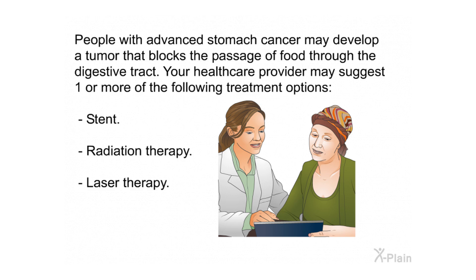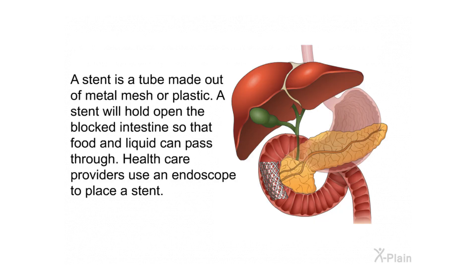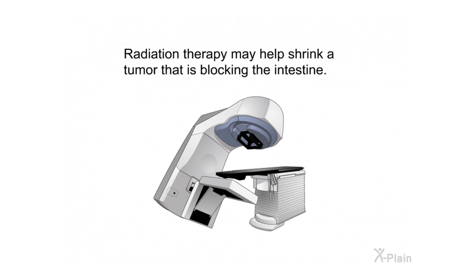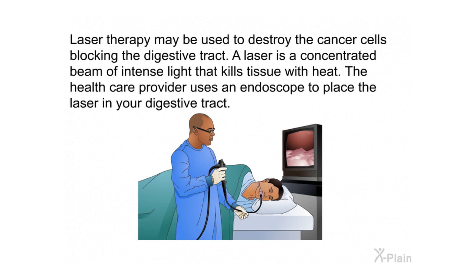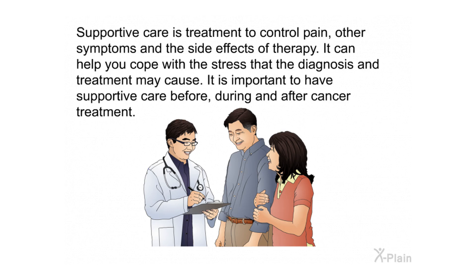People with advanced stomach cancer may develop a tumor that blocks the passage of food through the digestive tract. Treatment options in this case include a stent, radiation therapy, or laser therapy. A stent — a tube made of metal mesh or plastic — holds open the blocked intestine so food and liquid can pass through, placed using an endoscope. A laser uses a concentrated beam of intense light to kill tissue with heat, also placed via endoscope. Supportive care helps control pain, other symptoms, and side effects of therapy, and can help you cope with the stress of diagnosis and treatment.